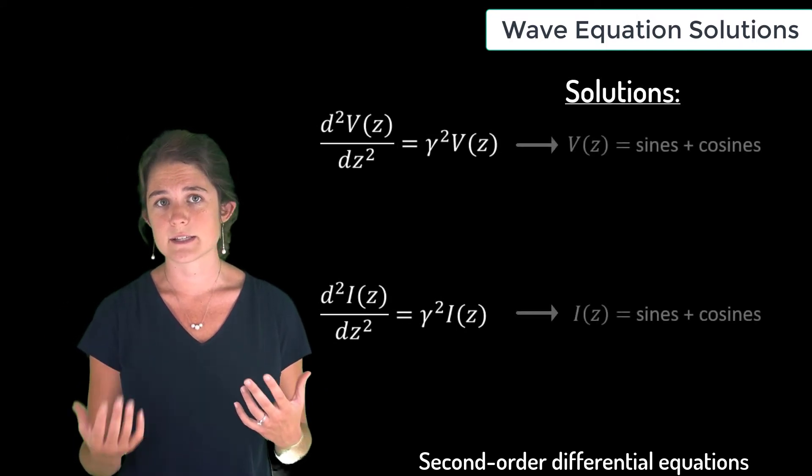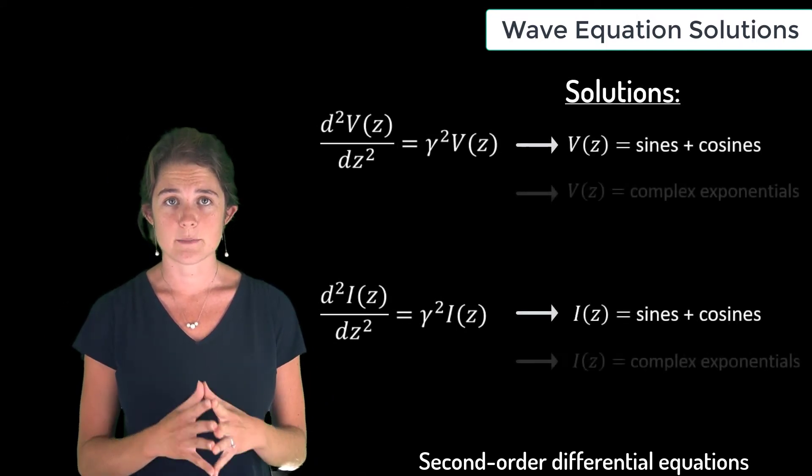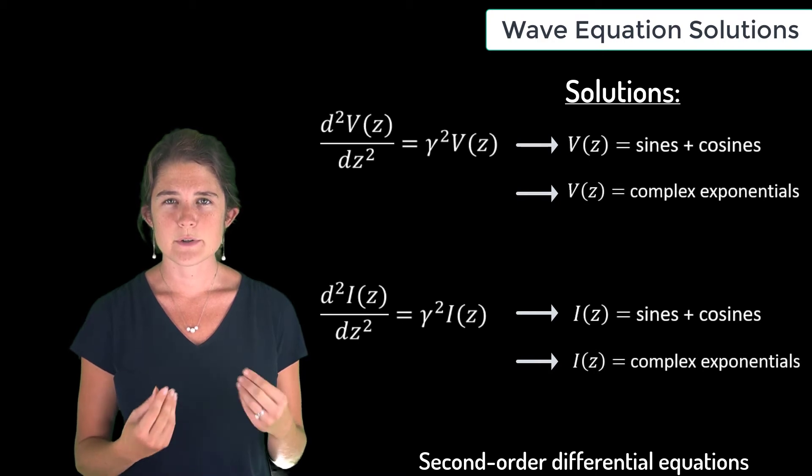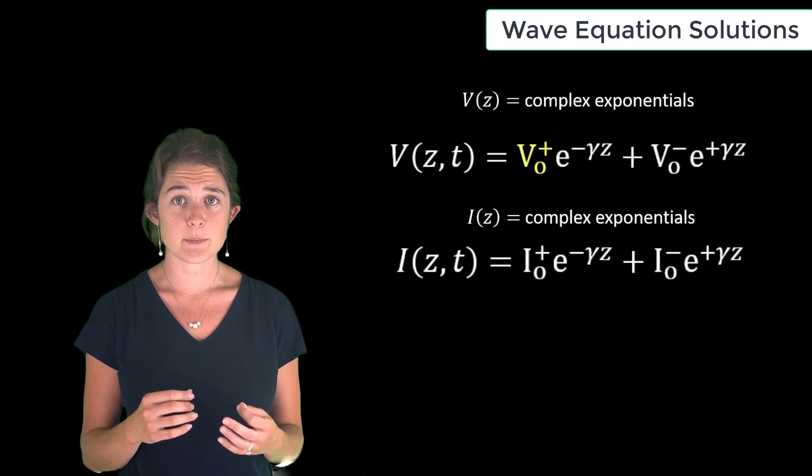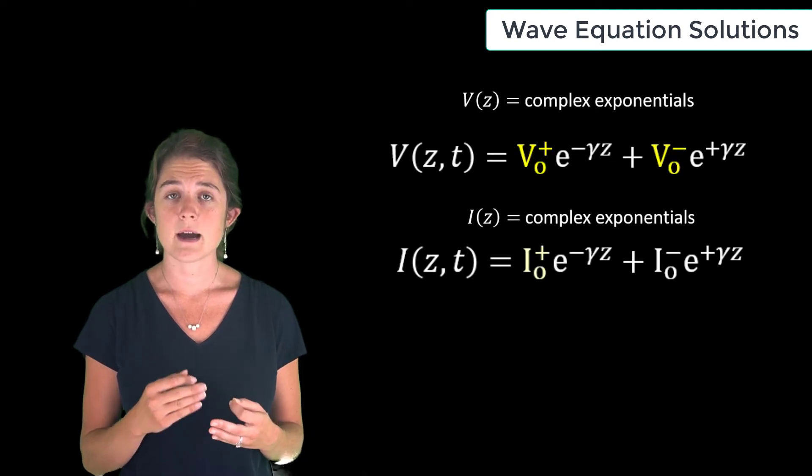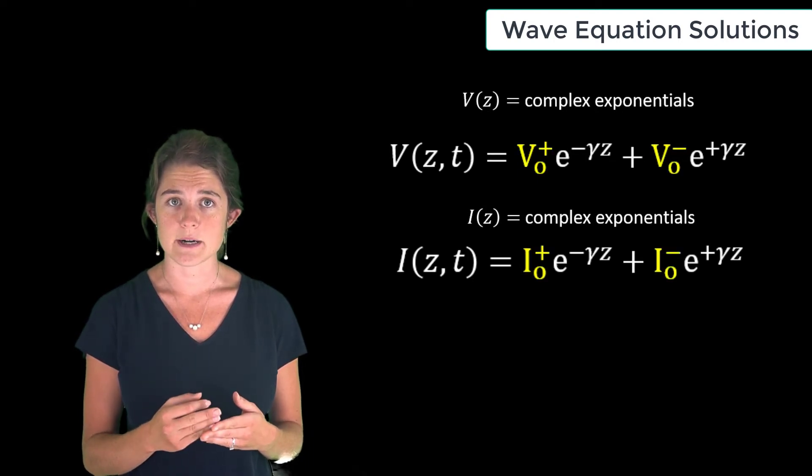solutions that can be expressed either as sines and cosines or as complex exponentials. We will choose to use complex exponentials. Here in these solutions, V₀⁺, V₀⁻, I₀⁺, and I₀⁻ are all variables corresponding to magnitude. Each of these solutions consists of two parts which signify two possible directions of propagation